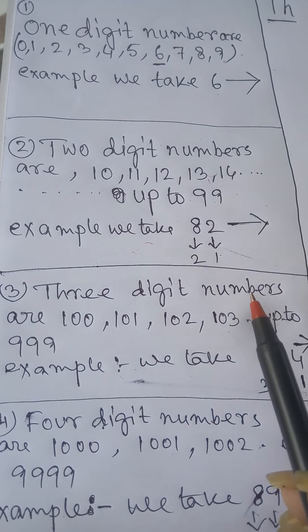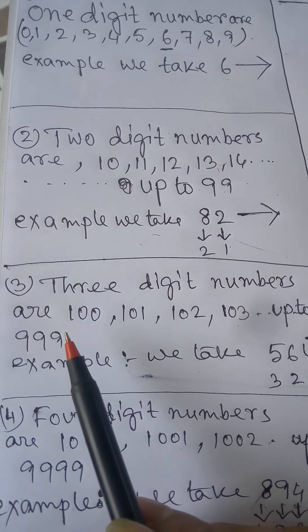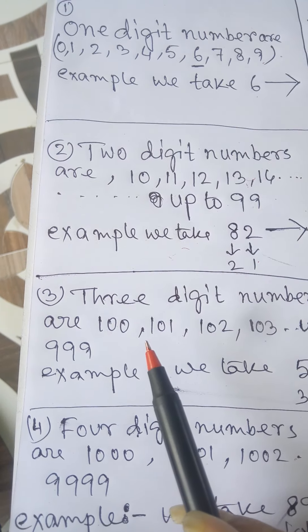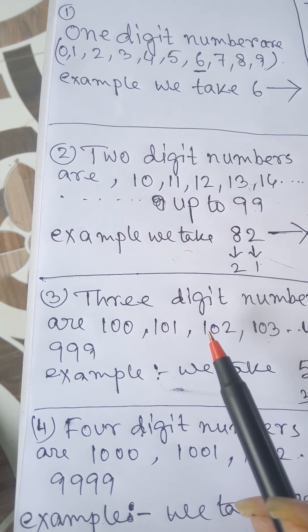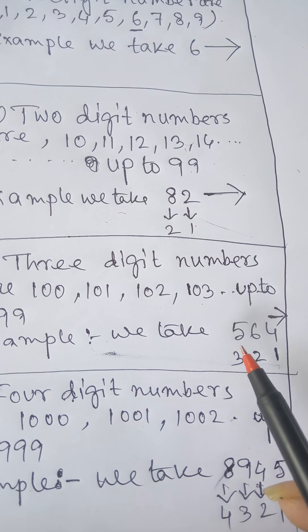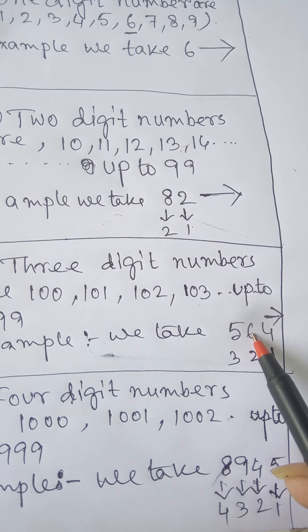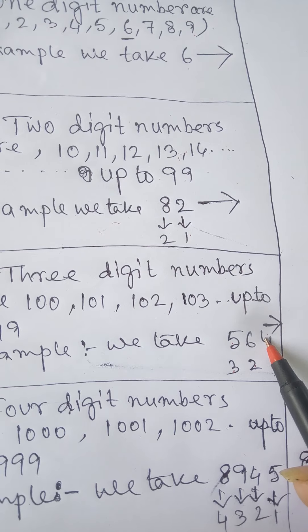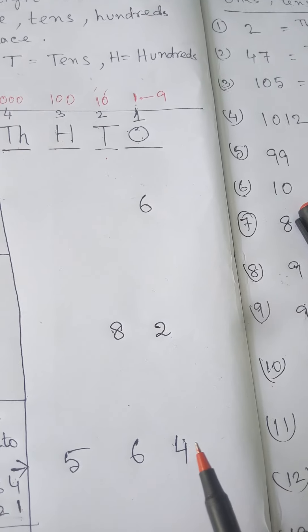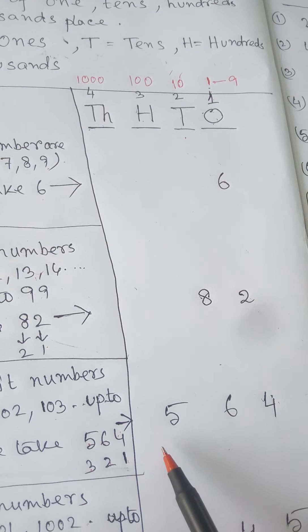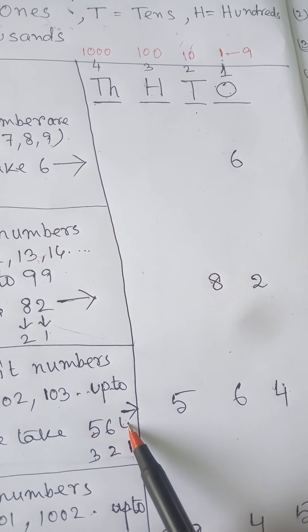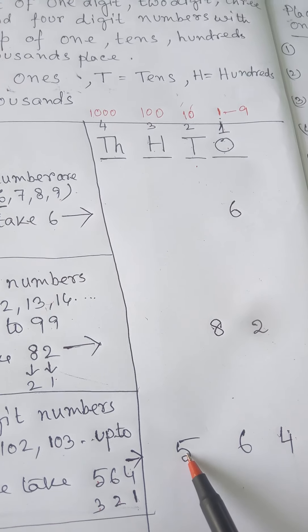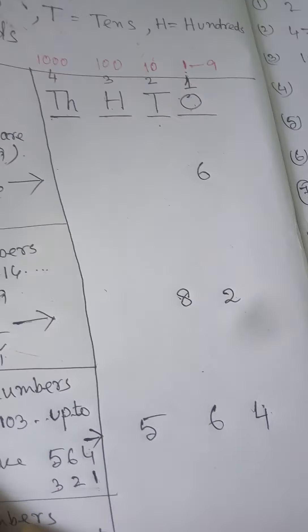Three-digit numbers are from 100 to 999. For example, 564 has three digits: 4 is the first digit, 6 is the second digit, and 5 is the third digit. We place 4 in the ones column, 6 in the tens column, and 5 in the hundreds column. The number is five hundred sixty-four.